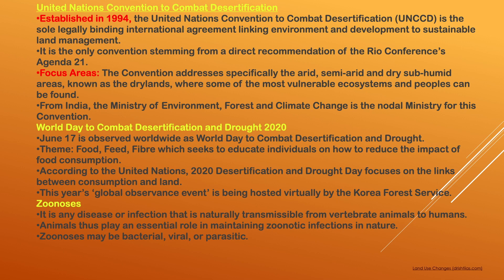The convention specifically addresses arid, semi-arid and dry subhumid areas — known as drylands — where some of the most vulnerable ecosystems and people can be found. From India, the Ministry of Environment and Forest and Climate Change is the nodal ministry for this convention.